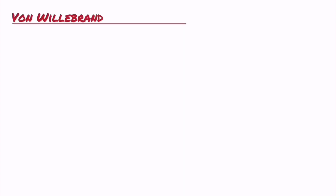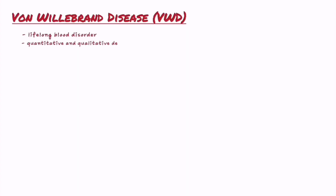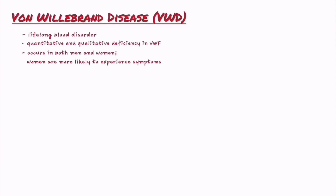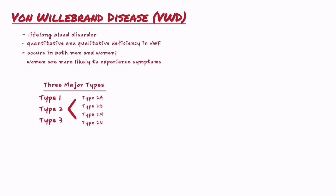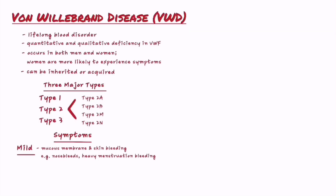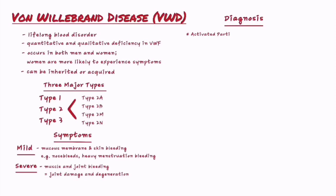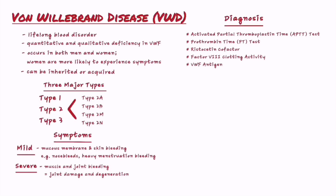To put it in a nutshell, von Willebrand disease is a lifelong blood disorder involving a quantitative and qualitative deficiency in von Willebrand factor. Though it occurs with equal frequency in both genders, women are more likely to experience symptoms. The three major types include type 1, type 2, and type 3, with four subtypes of type 2: 2A, 2B, 2M, and 2N. Most cases are inherited, but it is possible for it to be acquired due to a medical condition or medication. Mild symptoms include bleeding from mucous membranes and skin, while severe symptoms include bleeding into muscle and joints that may result in joint damage. Diagnosis comprises APTT, PT, ristocetin cofactor, factor VIII clotting activity, and von Willebrand factor antigen tests. Currently, there is no cure, but some treatments can help.